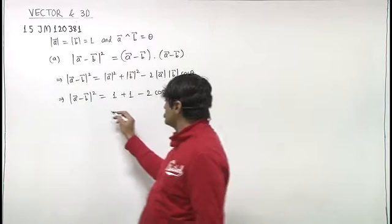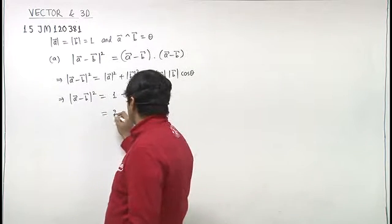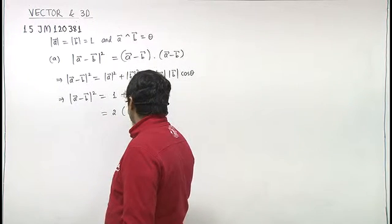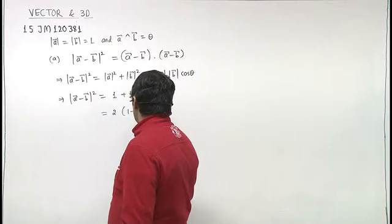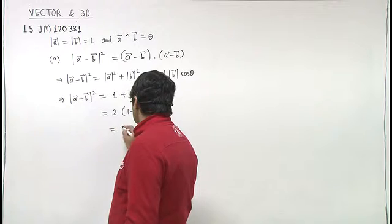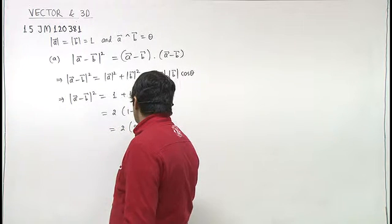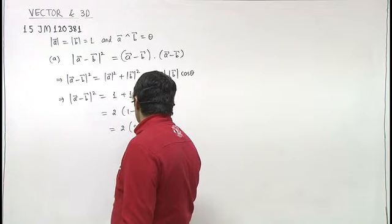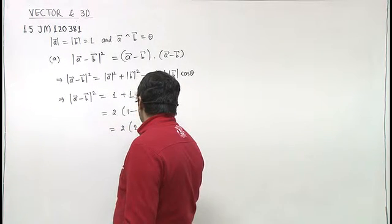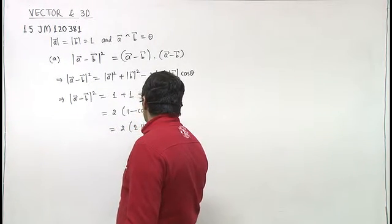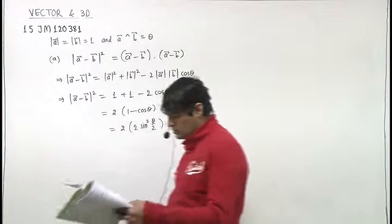So magnitude of a minus b whole square is one plus one minus two cos theta. Taking two as a common factor, we get two times one minus cos theta. And now we apply the trigonometric identity, giving us two times two sin squared theta by 2.